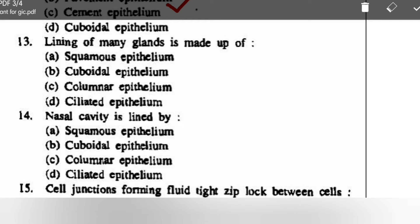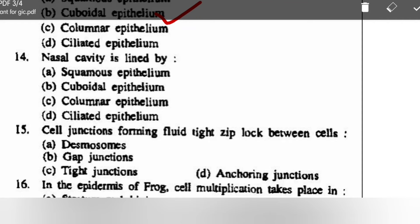Lining of mammary glands is made up of cuboidal epithelium — glands are lined by cuboidal epithelium. Nasal cavity is lined by: squamous, cuboidal, columnar, or ciliated epithelium — correct option is ciliated epithelium.